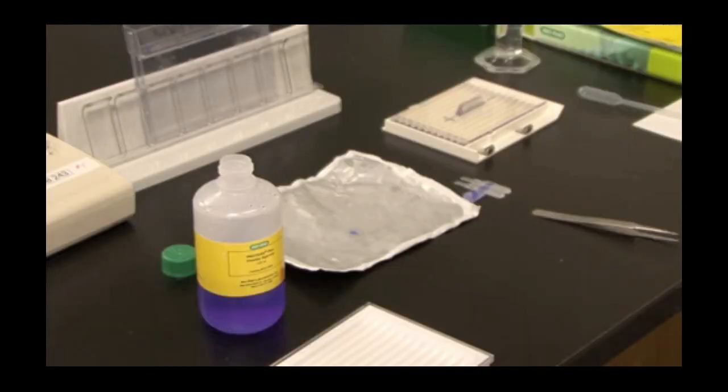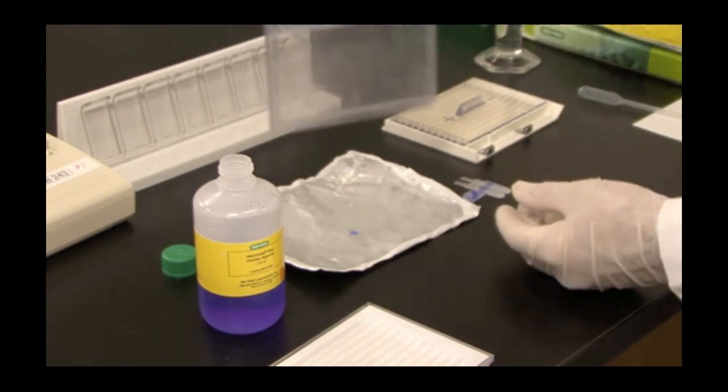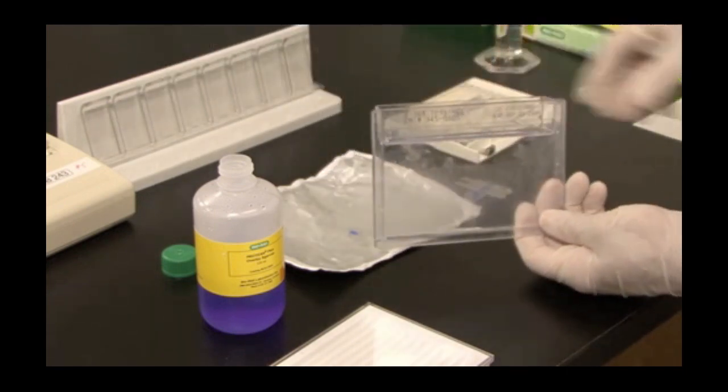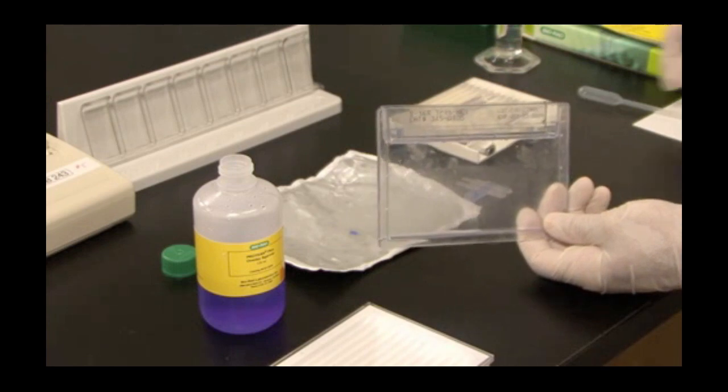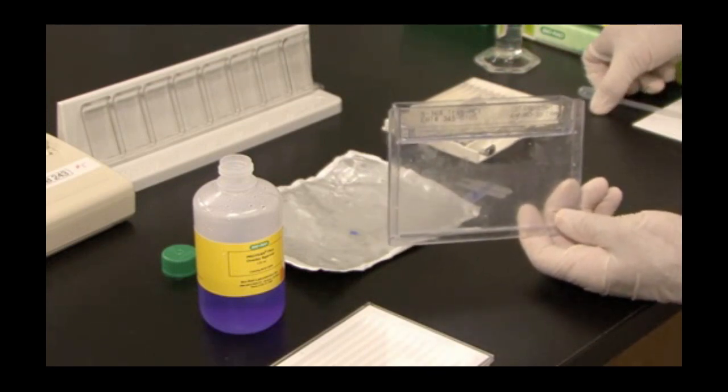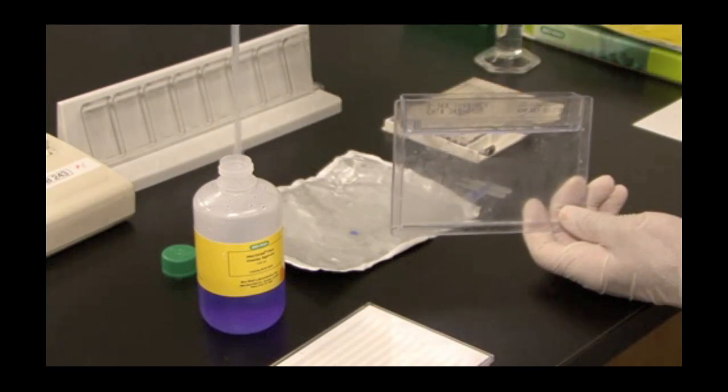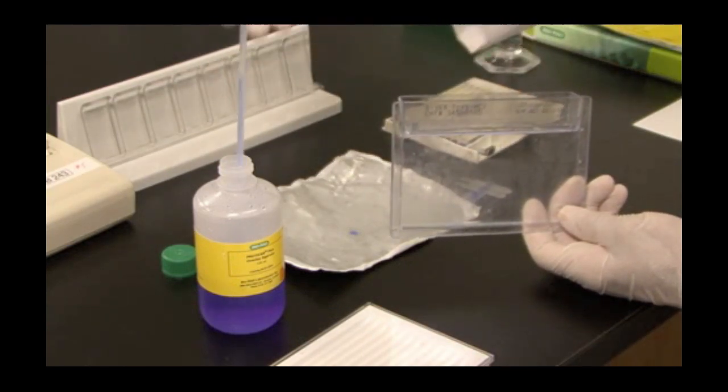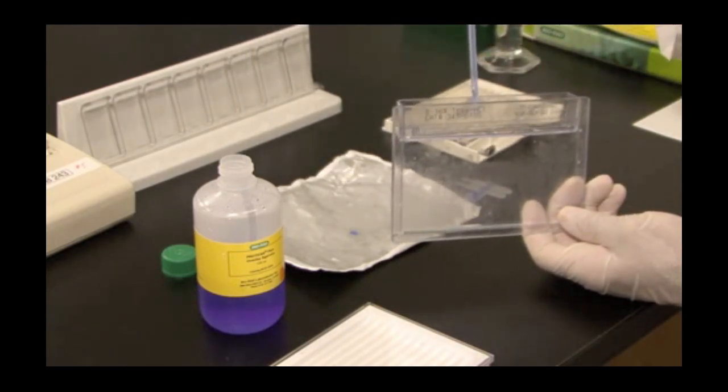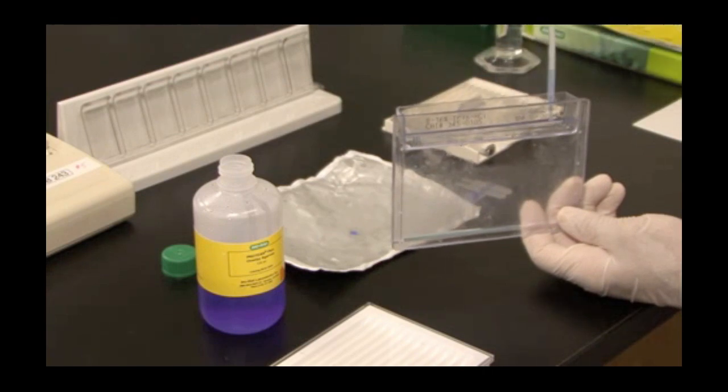At this point, we want to seal the IPG strip and standard gel plug into the well of the gel. I will use Protean Plus Overlay Agarose. Heat in the microwave oven until it boils. And when the temperature of the Agarose is no longer hot to the touch, take the hot Agarose and fill up the well. Do this in one rapid action, side to side.